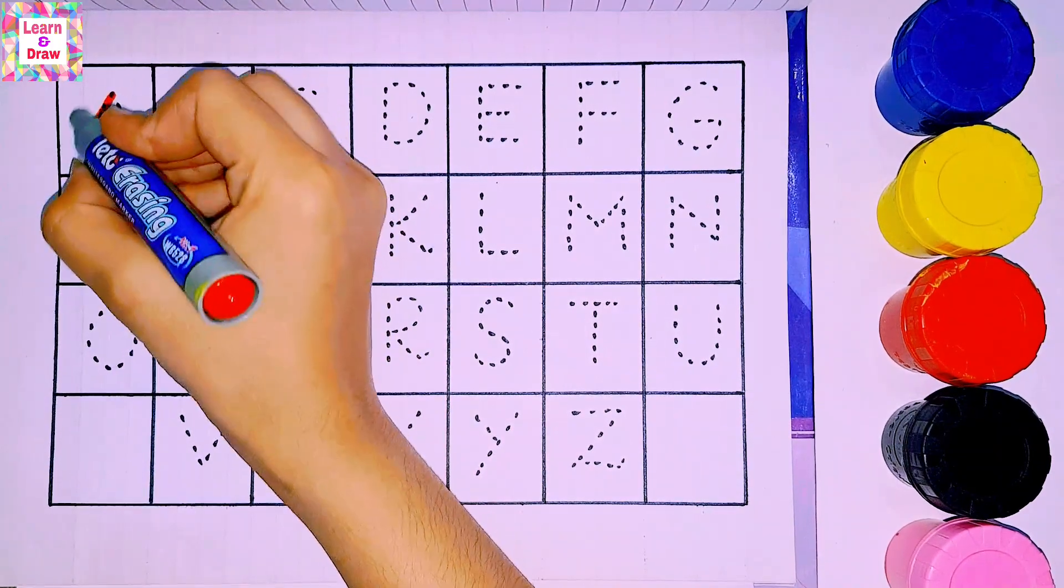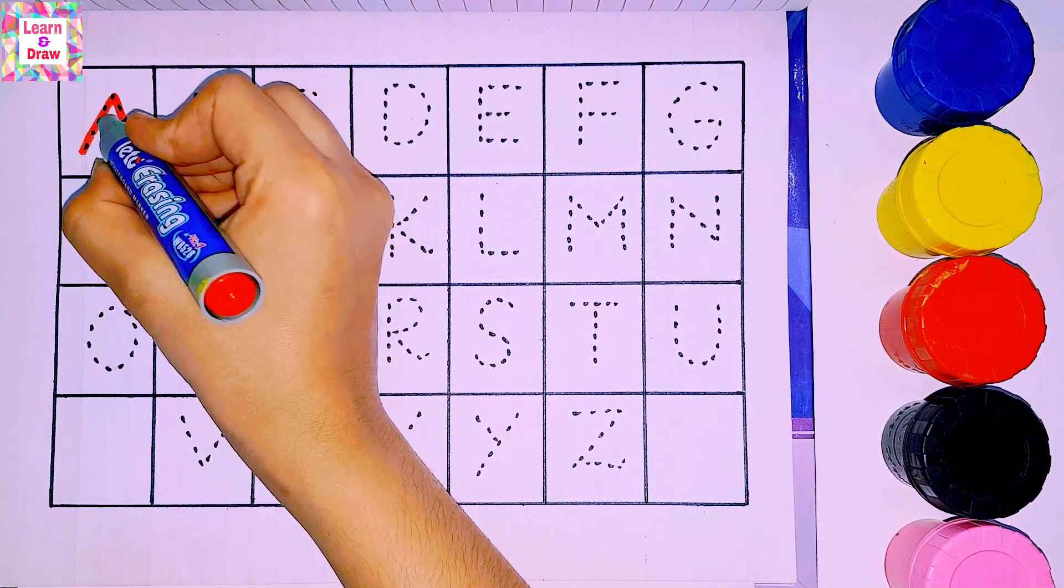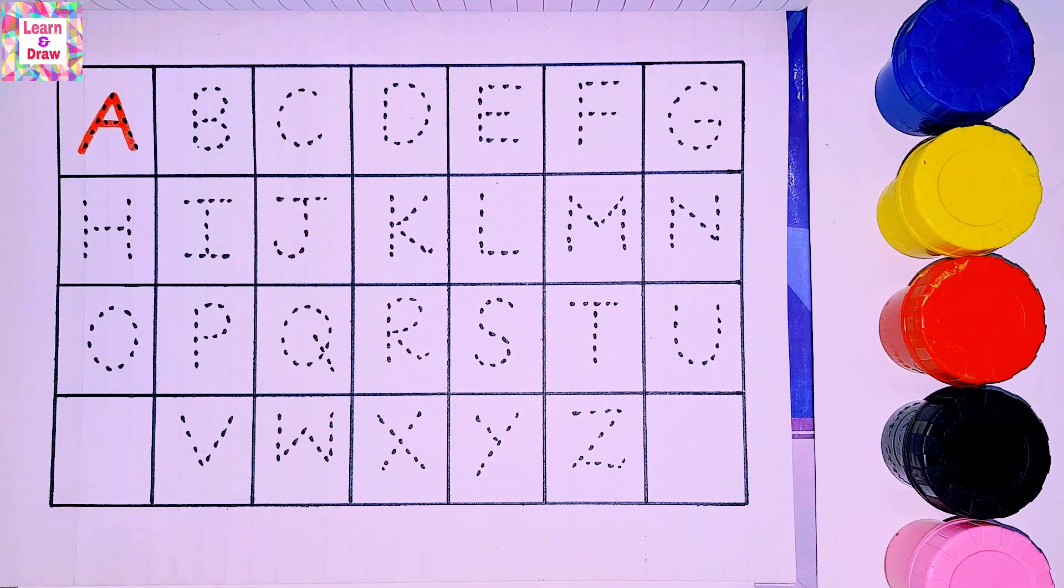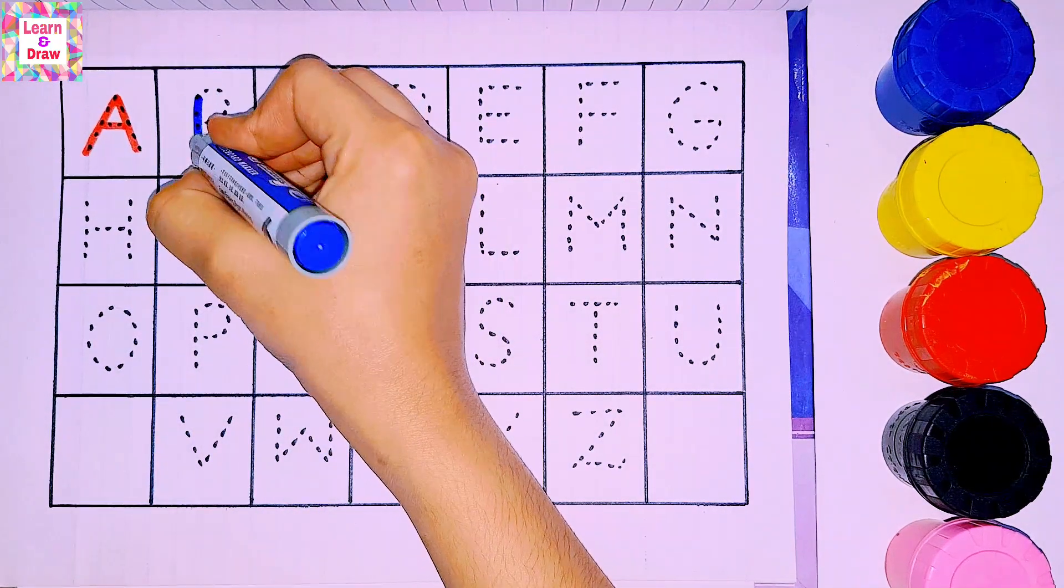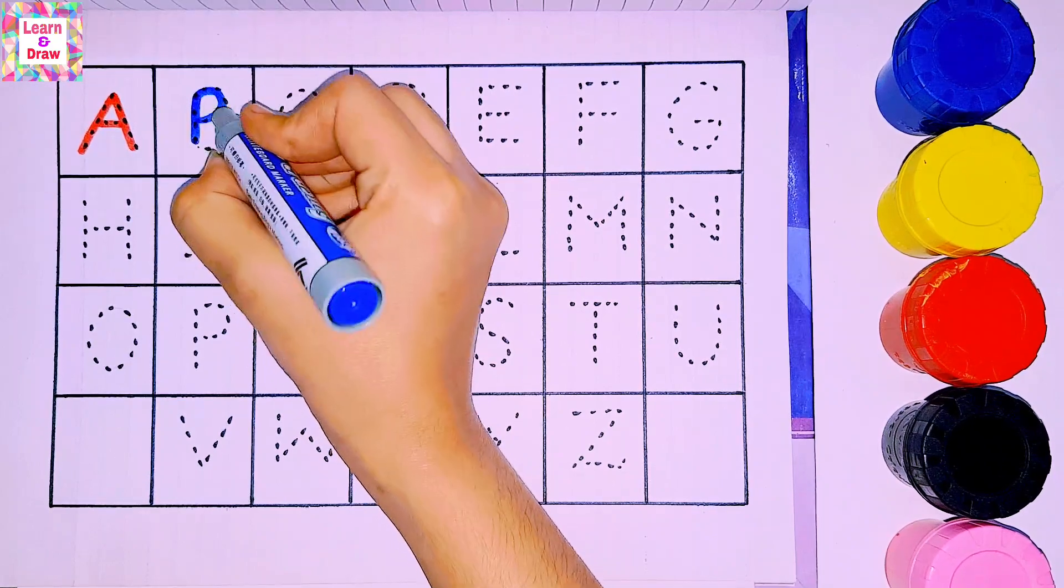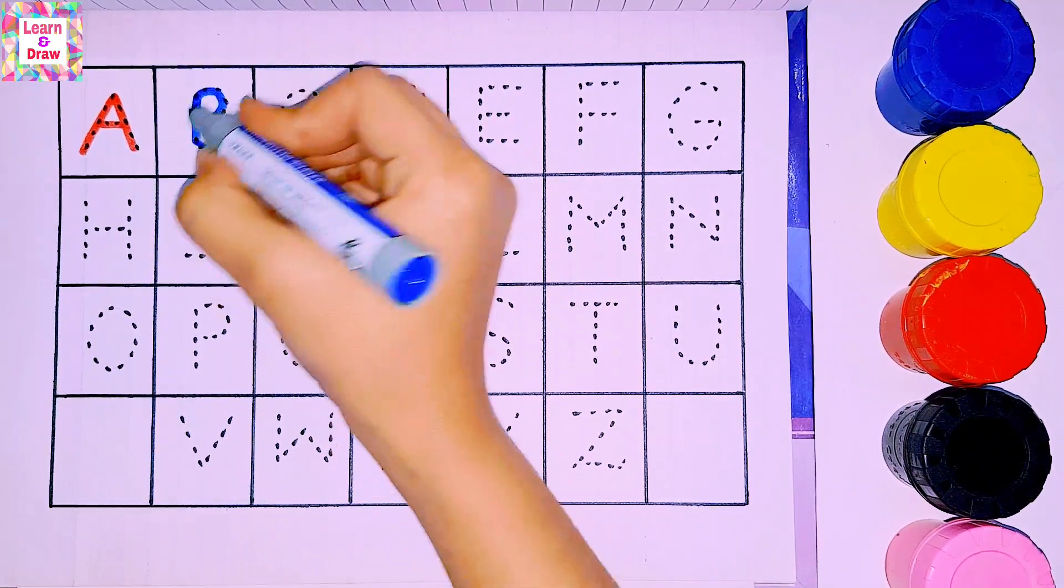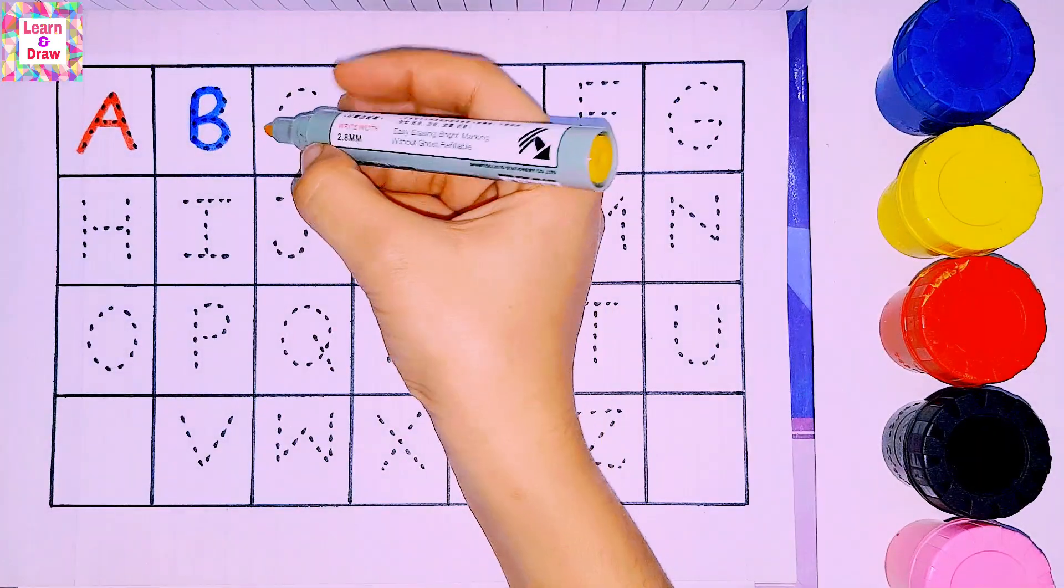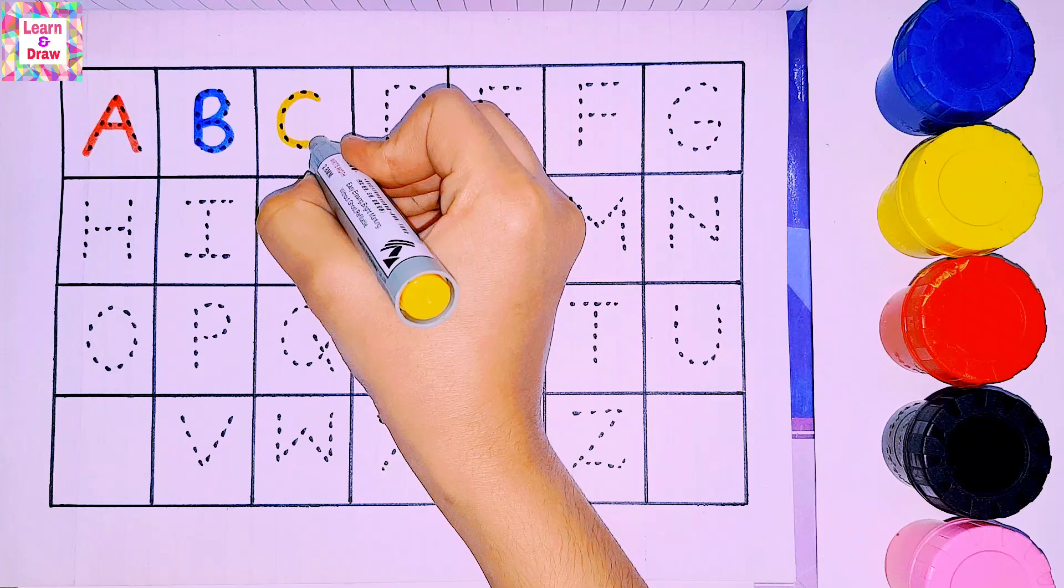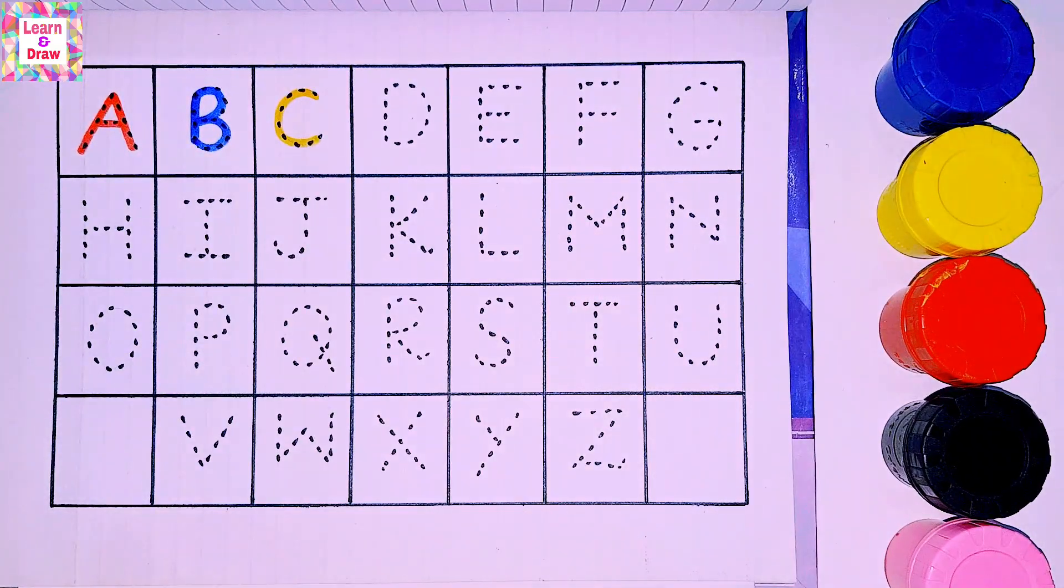Red color A. A for airplane. Blue color B. B for butterfly. Yellow color C. C for cat.